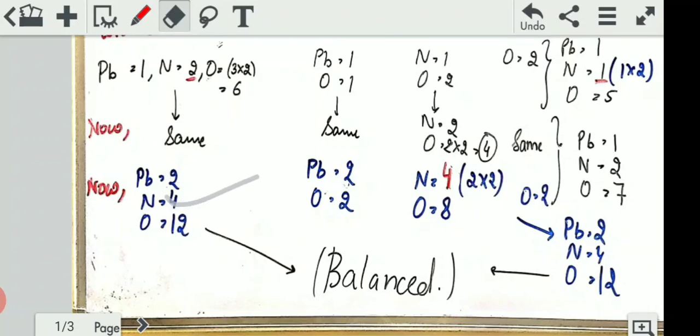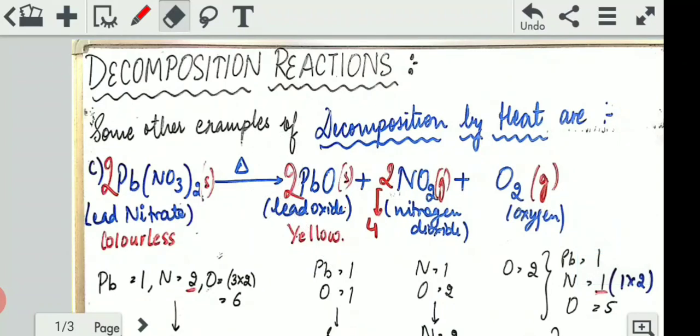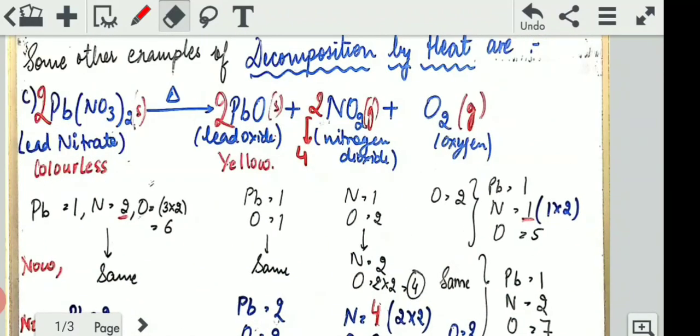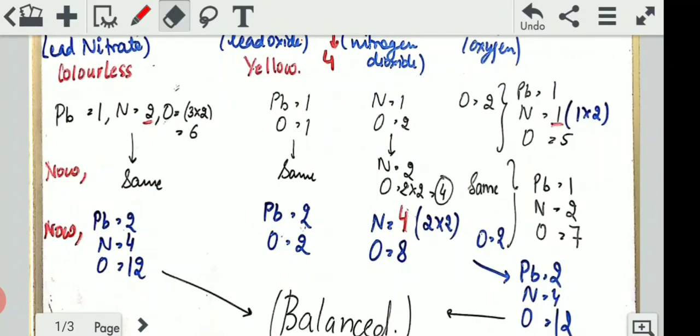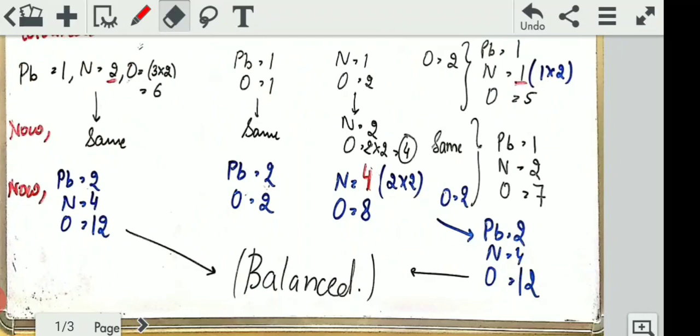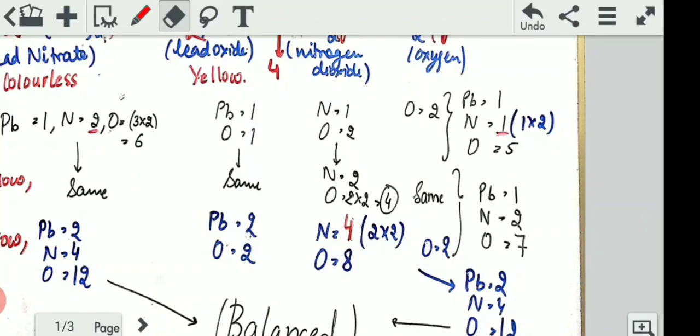Now lead is balanced... sorry nitrogen is balanced. That is four here, four here. But lead here became two and in products still what is it? One. So to make lead two here we will add two more. When we will add two here, lead will become two, oxygen also will become what? Two. Now oxygen has become two. But we have seen that nitrogen had become four here, and here nitrogen is still two. So instead of two we will add four here. As we made nitrogen four, nitrogen became four and oxygen two and four multiply becomes eight. So now two plus eight is ten plus how much oxygen here? Two. That has become twelve.